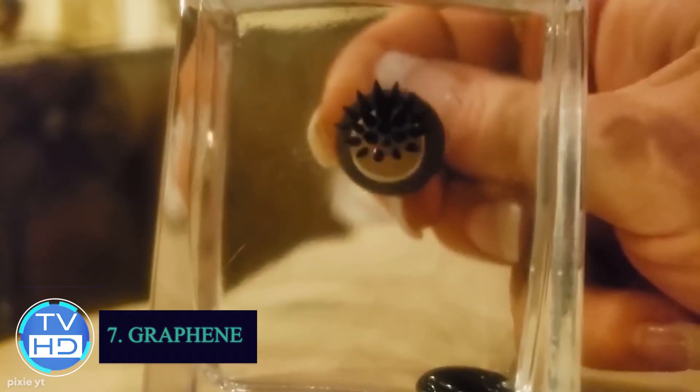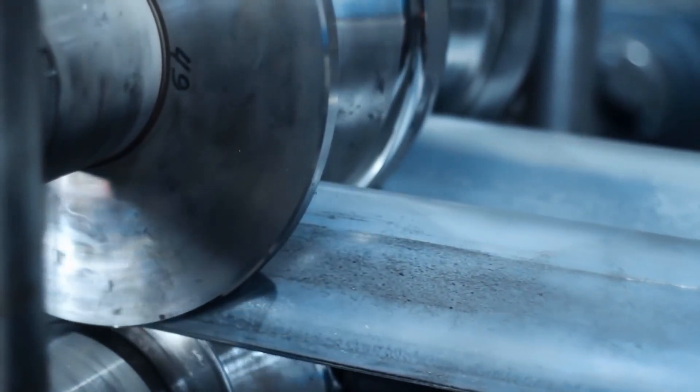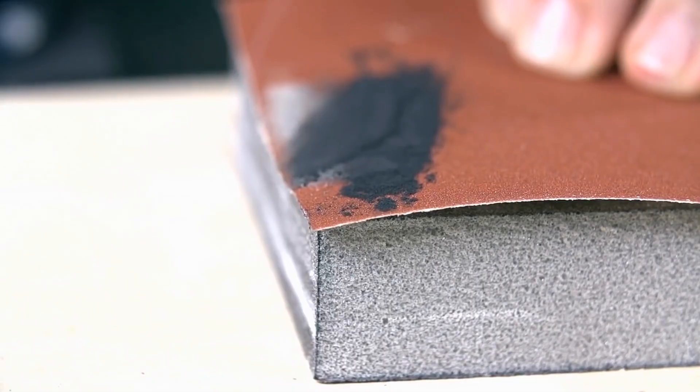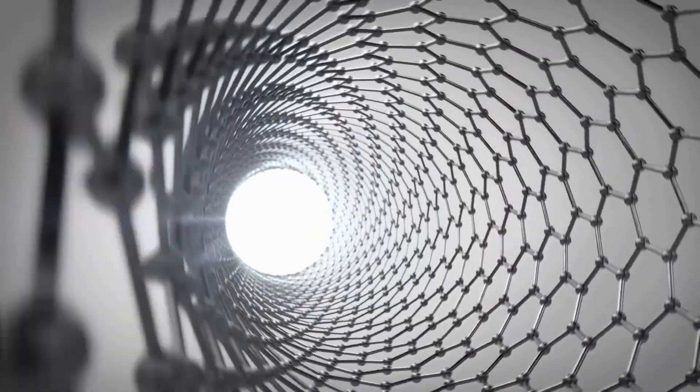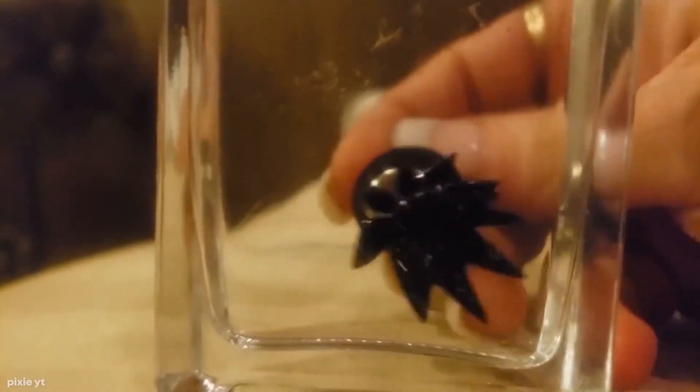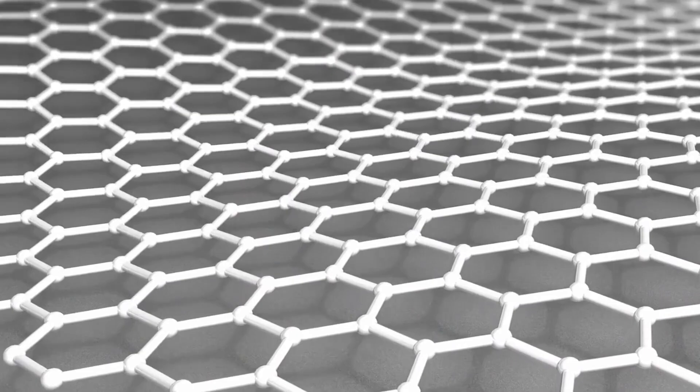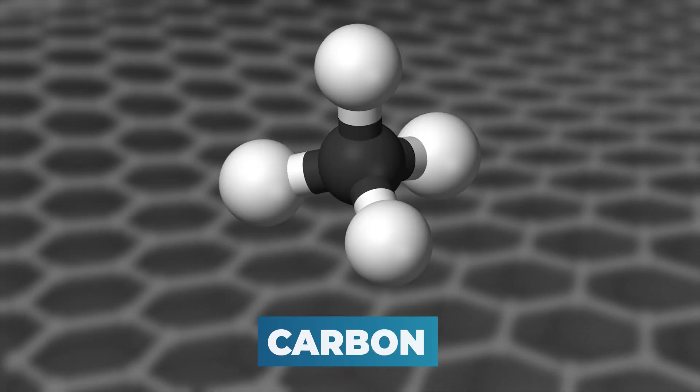Number 7: Graphene. Industries are always searching for more reliable compounds to boost their performances, and the next game-changing compound on the list is graphene. Graphene appears as a long-theorized structure but isn't very easy to manufacture. As the name indicates, it is derived from graphite, and these compounds are entirely composed of carbon atoms.